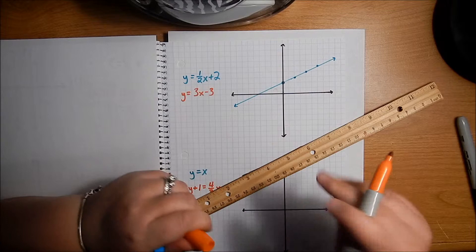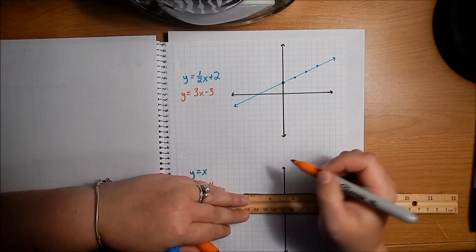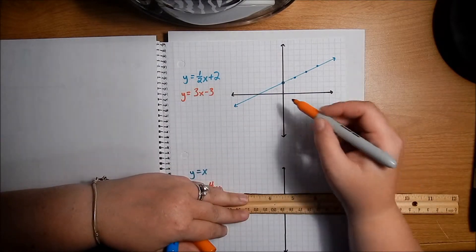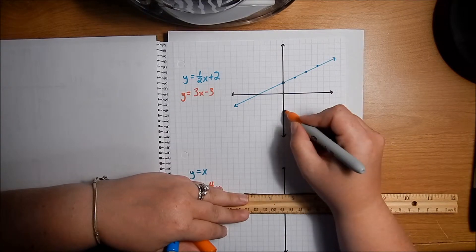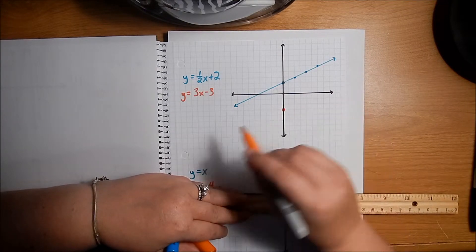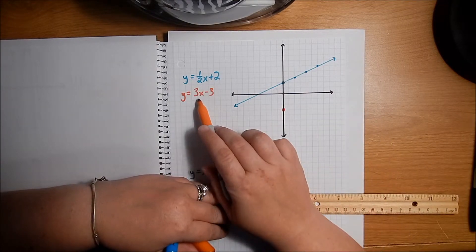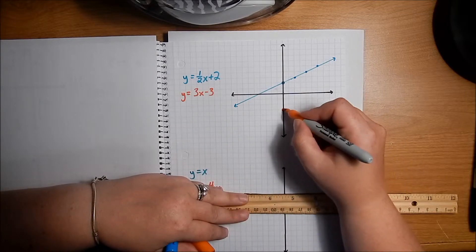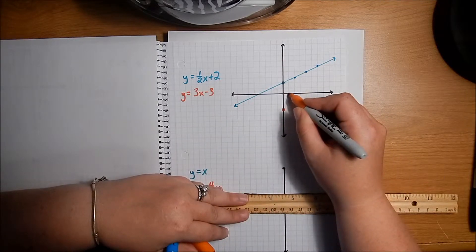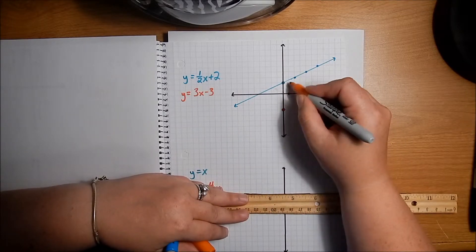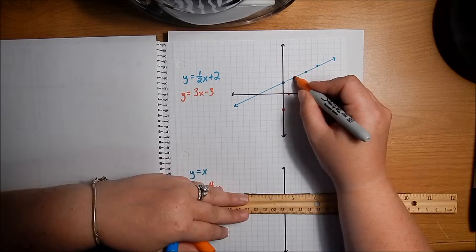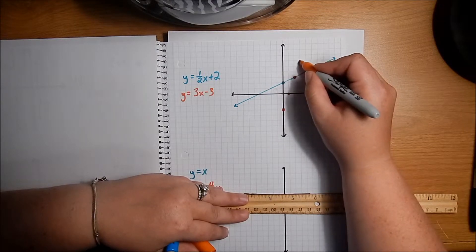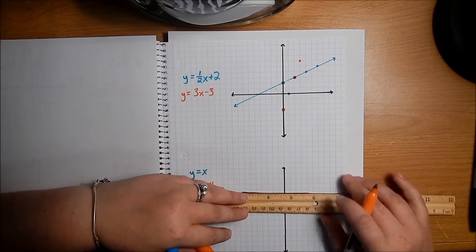Let's graph this next one: y equals 3x minus 3. My y-intercept would be negative 3, so I'll start down at negative 3 and put a dot. Then I follow the slope, which is positive 3, meaning go up 3 to the right one, up 3 to the right one. And right there I have two points that overlap.